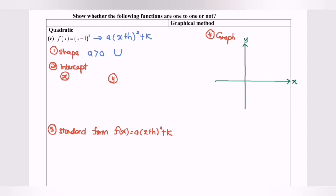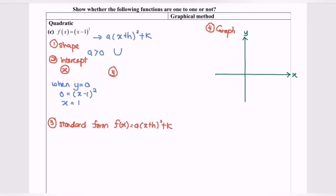Step two is to determine the intercepts for the x-axis and y-axis. To find the x-intercept, set y = 0: 0 = (x − 1)², so x = 1, giving coordinate (1, 0). For the y-intercept, set x = 0: y = (0 − 1)² = 1, so the coordinate is (0, 1).